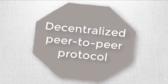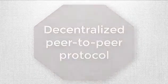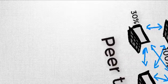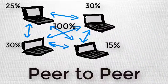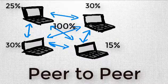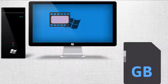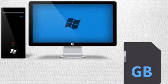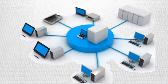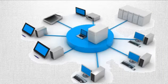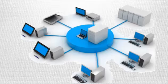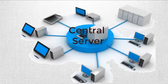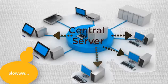BitTorrent is basically a peer-to-peer protocol in which various groups of computers are downloading and uploading the same file without the need of a central server. If you are downloading normally from a web page, you need a central server where the file is stored and all people go to that server to download that file, which creates a lot of downloading pressure or traffic on that server.